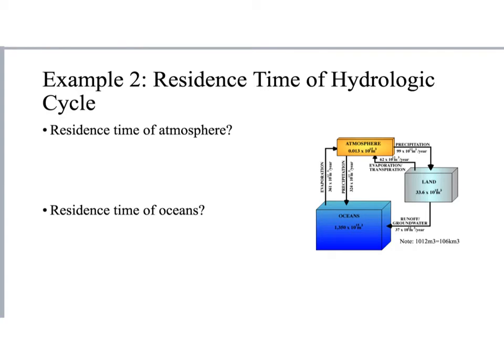Okay, so that's an example that we're not really going to worry too much about in this course. But what we are going to consider is residence time in some of our control volumes. And so in this example, we're going to go through the calculation of finding the residence time of two of the reservoirs in our hydraulic cycle. So first, I'm going to ask how long on average does a particle of water stay in the atmosphere? Okay, and then we'll do the same for oceans.